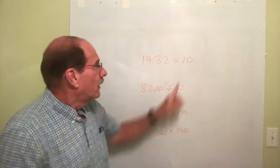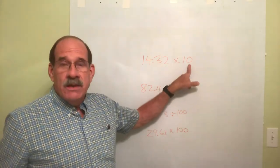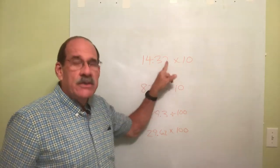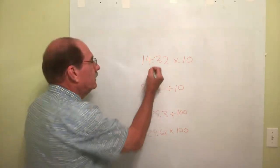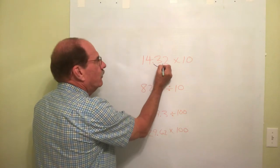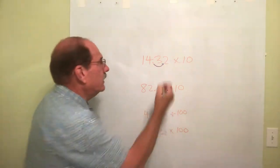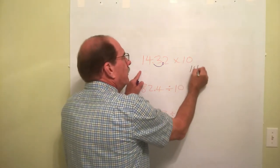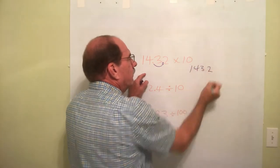How many times? Well, since there's one zero in the number 10, you move the decimal place, the dot, one place to the right. So the dot's right there. We jump one place to the right. The dot ends up right there. So the answer is 143.2.